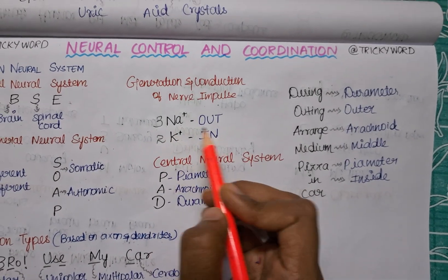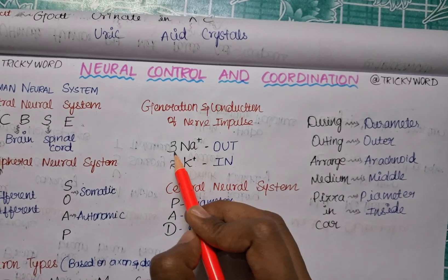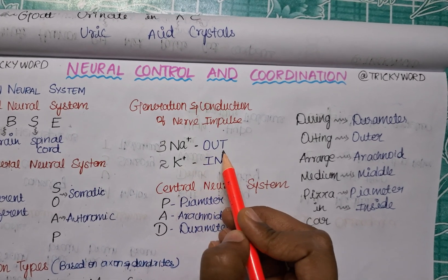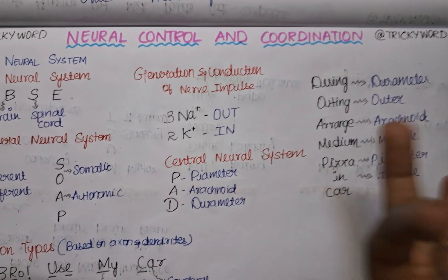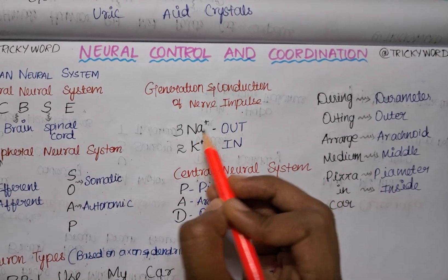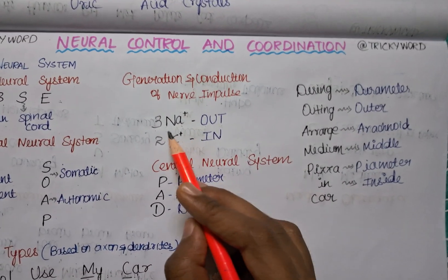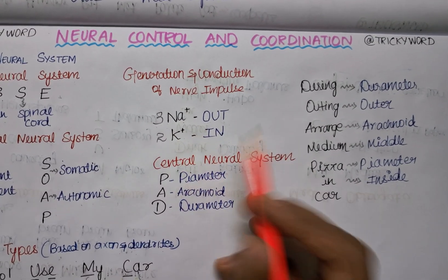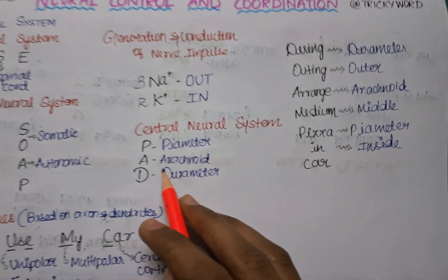To reinforce: whenever you're confused about how many sodium ions go out, remember OUT has three letters. Also, Na+ has three digits/characters, so it goes out. Therefore: three Na+ go out, two K+ go in.